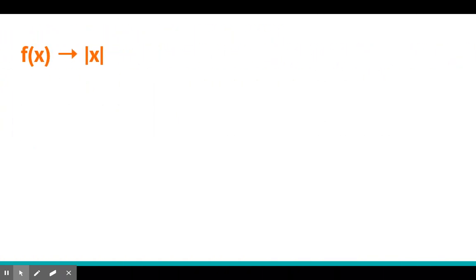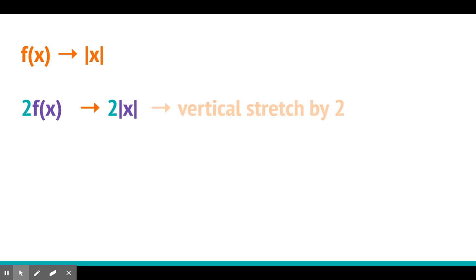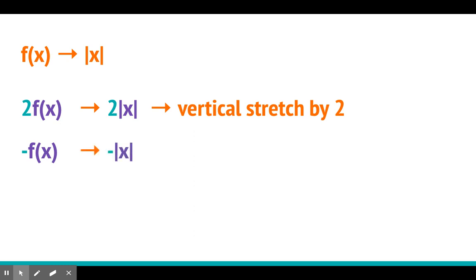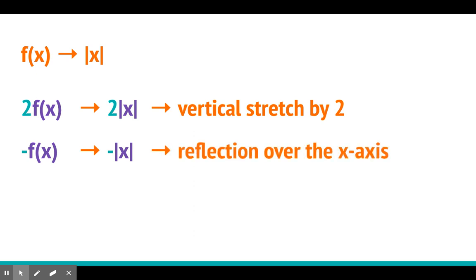We're going to take our function f(x) and make it absolute value of x specific. So 2f(x) — now we're replacing that f(x) with absolute value of x. Just like before, this is a vertical stretch by 2; it's on the outside. Negative f(x) — we can replace the function with any function, in this case negative absolute value of x — and that's a reflection over the x-axis.